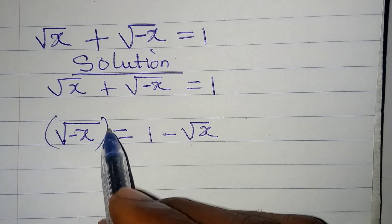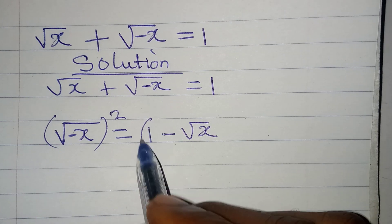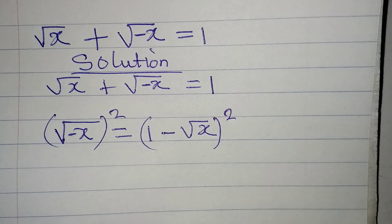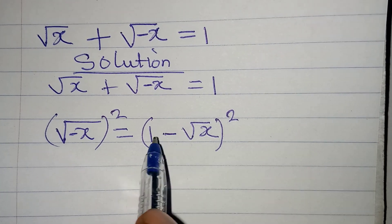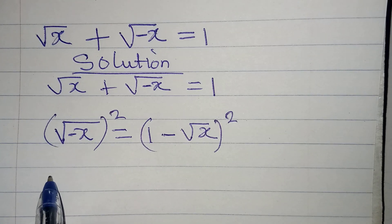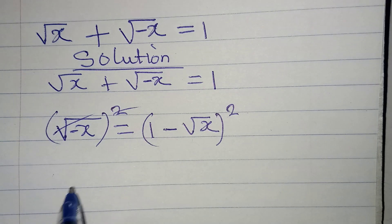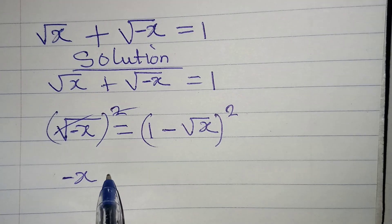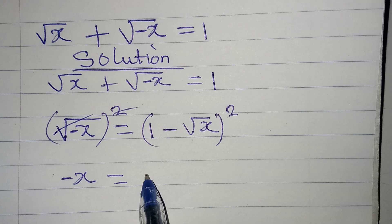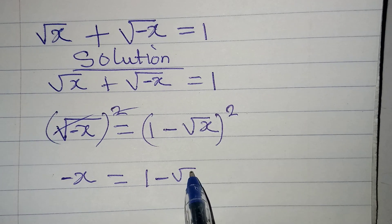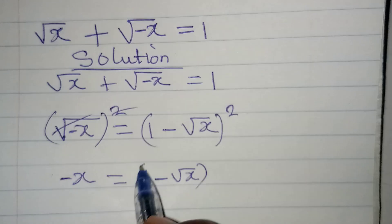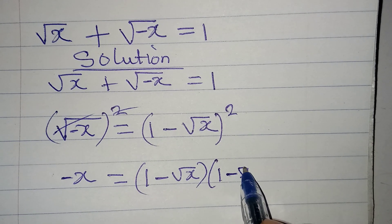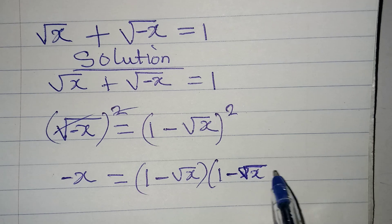At this point I can now remove the square root by squaring both sides. The next step is to expand, so that the square root cancels and negative x is alone, equal to (1 - √x)(1 - √x).